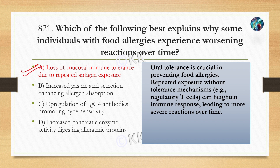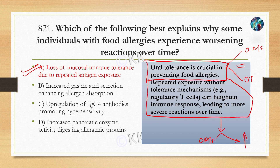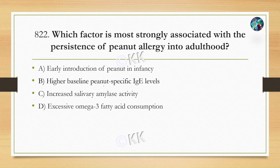The correct option is A — loss of mucosal immune tolerance due to repeated antigen exposure. Oral tolerance होता है, और उसका जो allergic response है वो बढ़ सकता है, जो majorly regulatory T-cells की वजह से होता है, which can heighten the immune response, और उसके वजह से severity of reaction बढ़ सकता है।